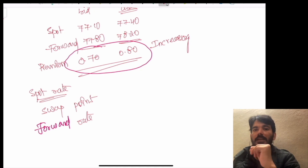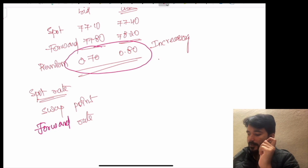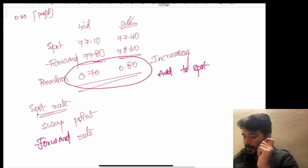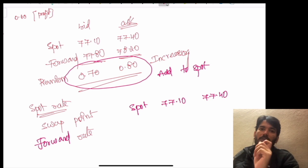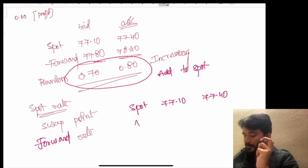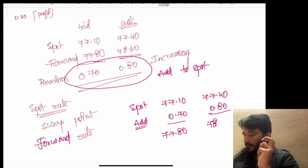Swap points are in increasing trend. If the swap points are in increasing trend, we will add them to the spot rate. The spot rate is 77.10 / 77.40. Because the swap points are in the increasing trend, we add 0.70 to the bid and 0.80 to the ask, giving us 77.80 / 78.20 as the forward rate.